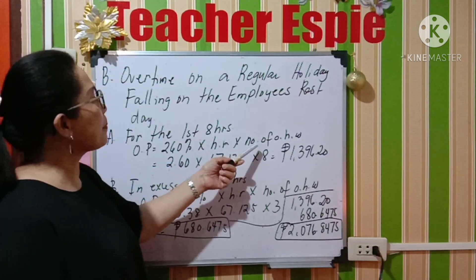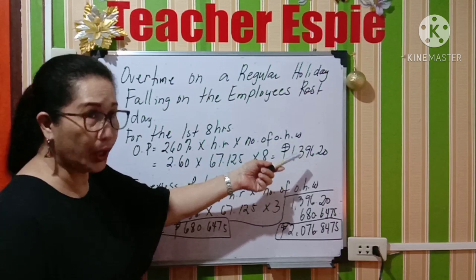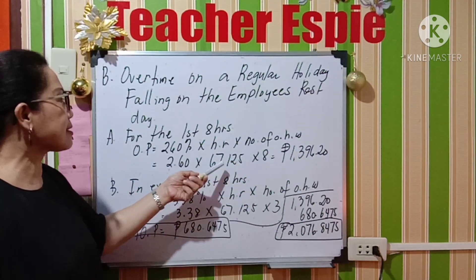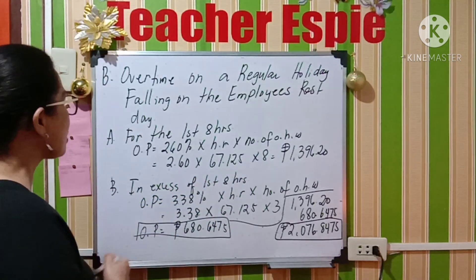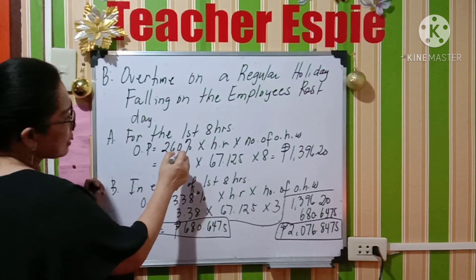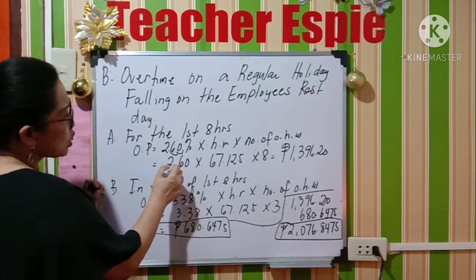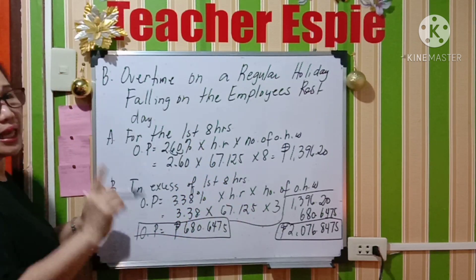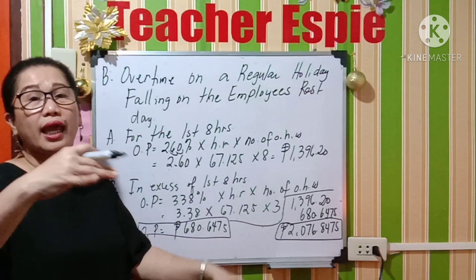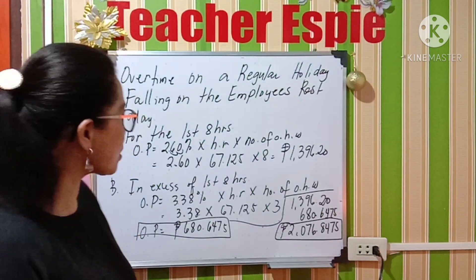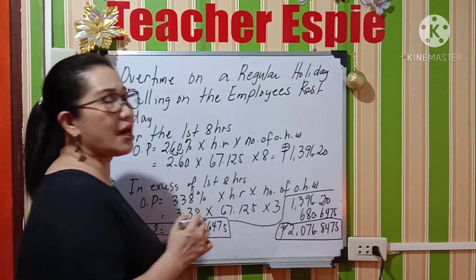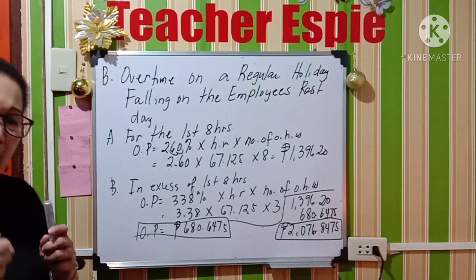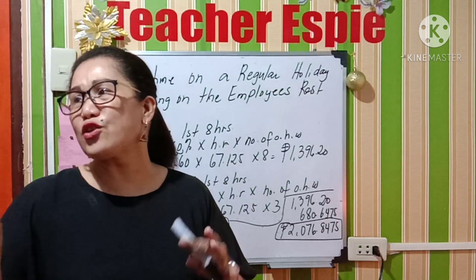For the first eight hours, the formula is: overtime pay equals 260% times hourly rate times number of overtime hours worked. Still using the Manila rate, your hourly rate is 67.125. Converting 260% to decimal gives 2.60. So that is 2.60 times 67.125 times 8 hours. For the first eight hours excluding the lunch break, you will be receiving 1,396.20 pesos.